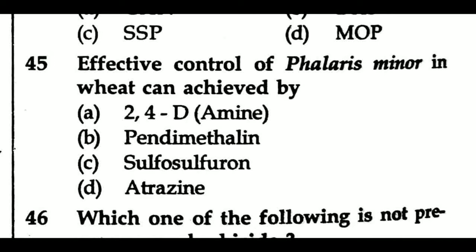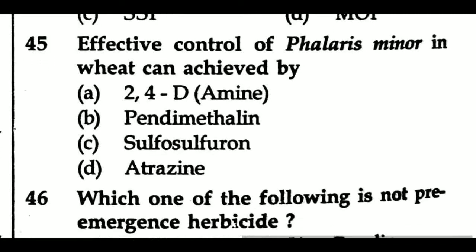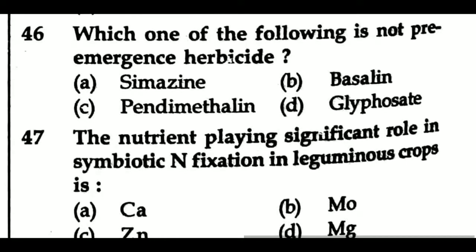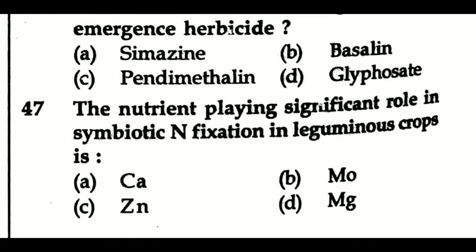Question 45: Effective control of Phalaris minor in wheat can be achieved by — Option A: 2,4-D amine, Option B: pendimethalin, Option C: sulfosulfuron, Option D: atrazine. Question 46: Which one of the following is not a pre-emergence herbicide? Option A: simazine, Option B: basalin, Option C: pendimethalin, Option D: glyphosate. Question 47: The nutrient playing a significant role in symbiotic nitrogen fixation in leguminous crops is — Option A: calcium, Option B: molybdenum, Option C: zinc, Option D: magnesium.